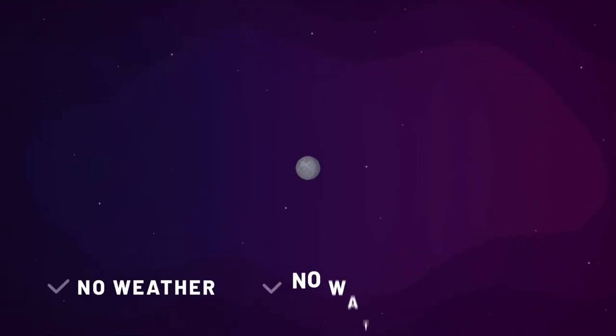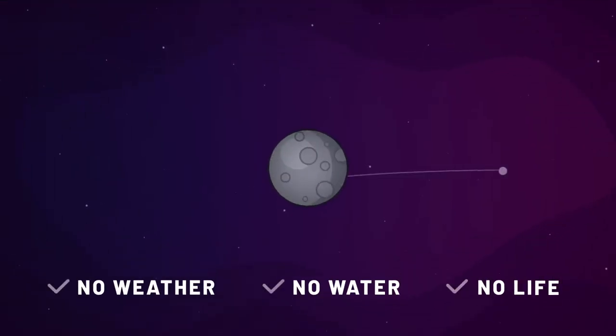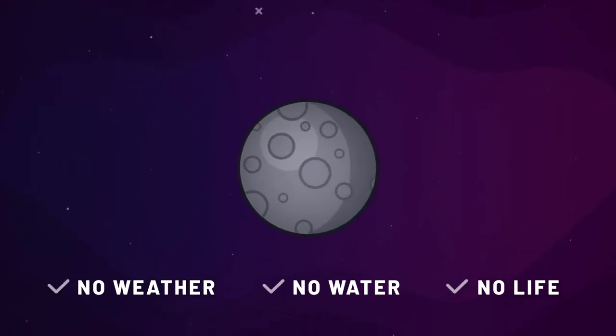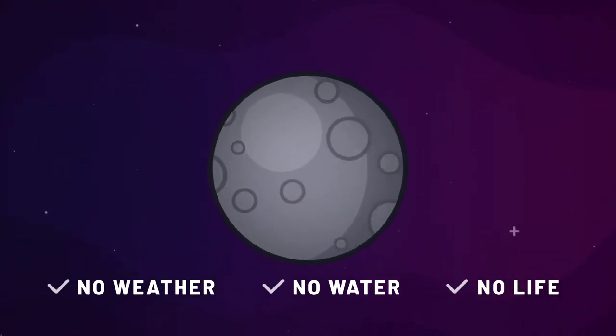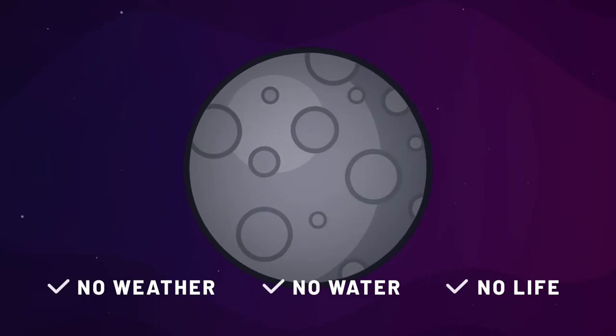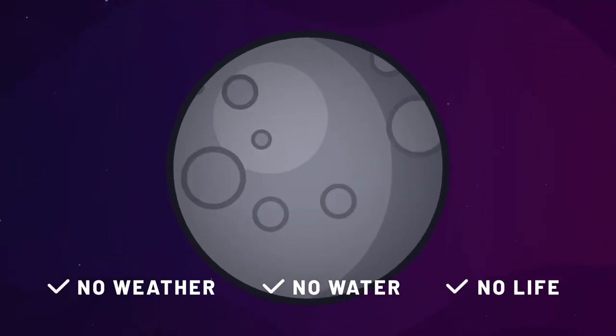Unlike the Earth, the Moon has no atmosphere. And without an atmosphere, the Moon has no weather, no water, and no life. The Moon's surface is an eternal vacuum.